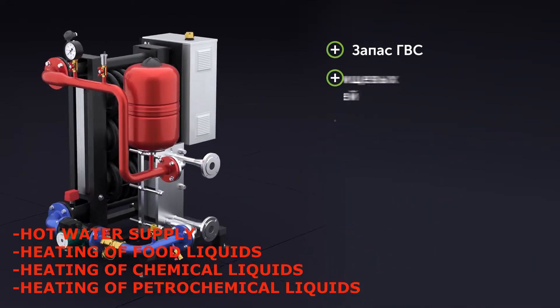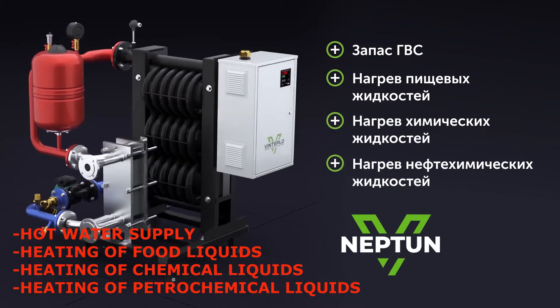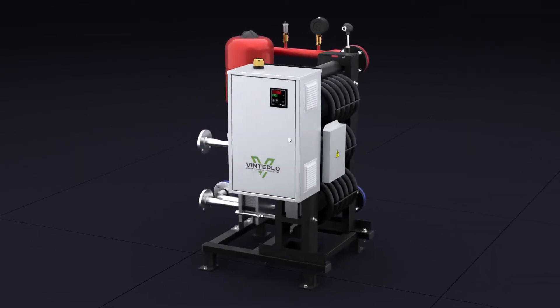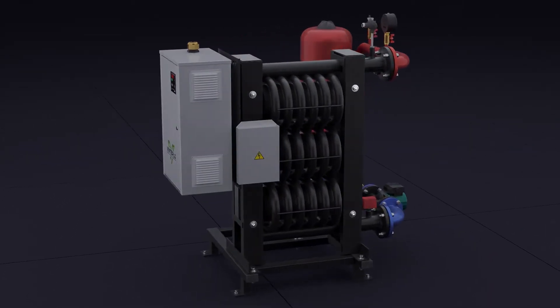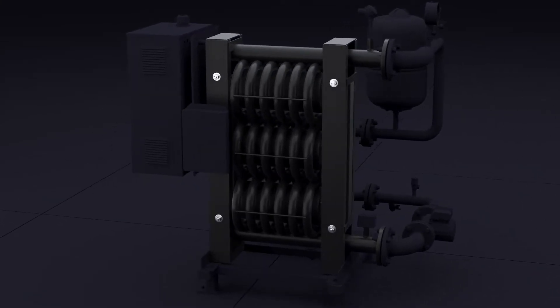By using a heating unit with a VinNeptin heat exchanger from VinTeplo, your company can be stably provided with a supply of hot water, as well as food, chemical, and petrochemical liquids heated to the required temperature. The VinNeptin heating unit is based on a Vortex Induction Heater and has all its advantages.